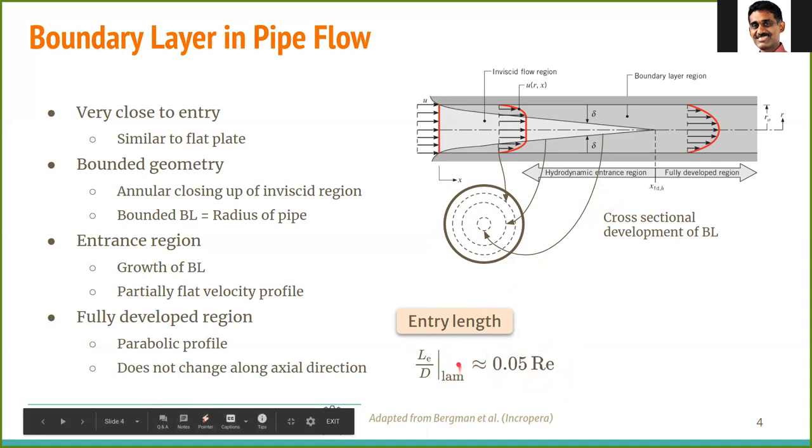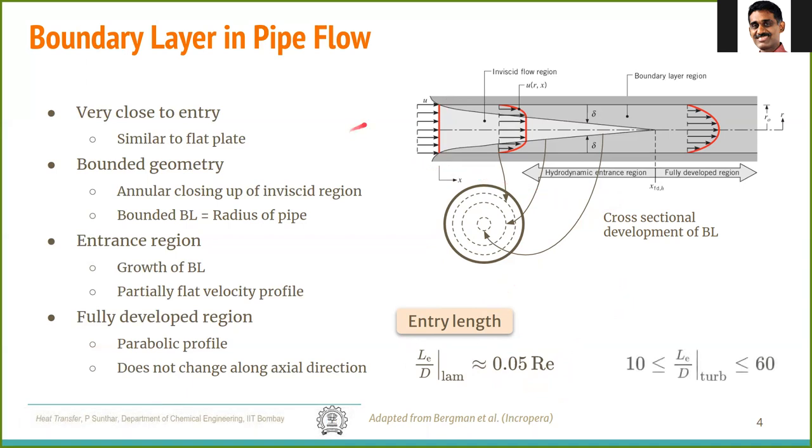This is for the laminar boundary layer. In the case of turbulent boundary layer, this entry length is not dependent on the Reynolds number, but it is simply 10 times the diameter up to 60 times the diameter, depending on the roughness of the pipe.